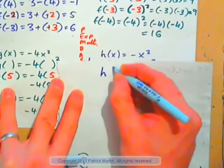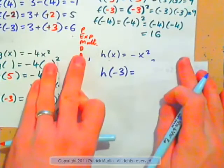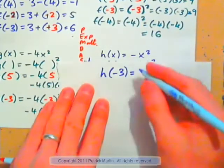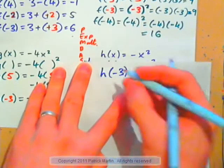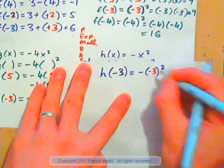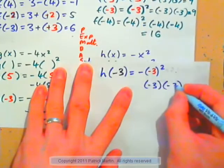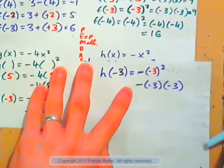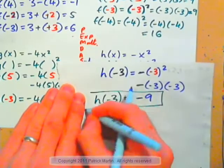h of x equals negative x squared — can you calculate h of negative 3? It would be negative parentheses squared. The input is negative 3, so that goes inside the parentheses. The squared applies to the parentheses: that's parentheses times parentheses, negative 3 times negative 3, and the negative sign stays outside. Negative 3 times negative 3 is positive 9, and with the negative sign: h of negative 3 is equal to negative 9.